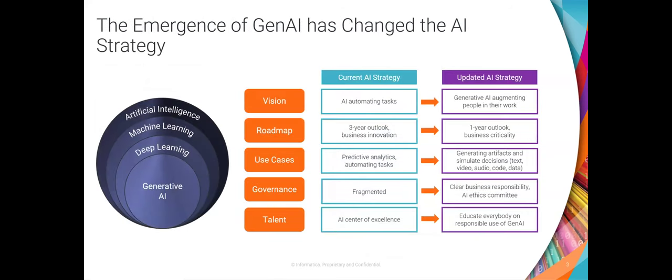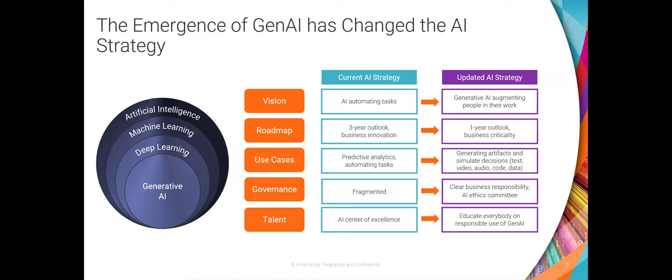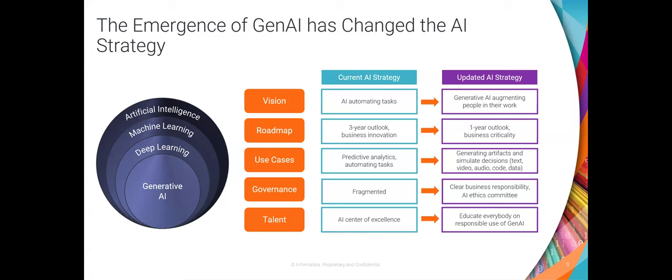So we've talked about how AI has been there for the last 10 years — a lot of buzz around AI, machine learning, then deep learning. Now with the emergence of generative AI, this has actually accelerated. You can see the current state of AI strategy versus the updated AI strategy post generative AI. There is a huge shift: customers are looking to augment their workforce by introducing AI in marketing, sales, technology, development — everywhere. The roadmap has reduced from three years to one year; it's not a 'good to have,' it is a 'must have.' The use cases have also evolved significantly.